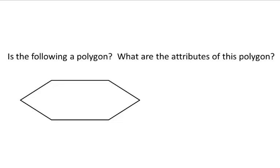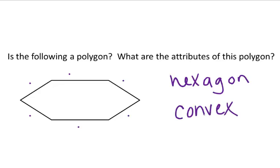Alright, so here's an example problem. Is the following a polygon? Well, yes, because all of the sides connect. There are no holes. Like, if you were pouring water, the water would not get out of the polygon. And what are the attributes of this polygon? Well, first, we'll classify the sides. There are one, two, three, four, five, six sides, which makes it a hexagon. And then, like we talked about before, concave versus convex, this would be a convex polygon. Because if I extended each of the sides, then none of them would travel into the center of my polygon.